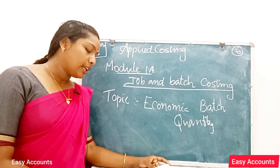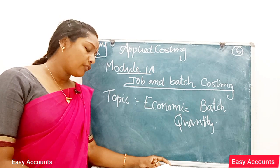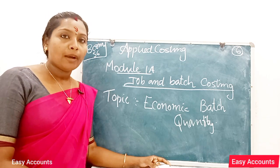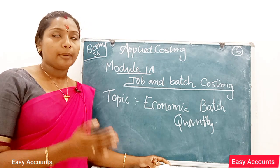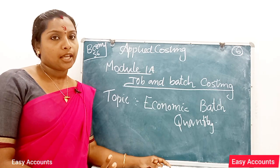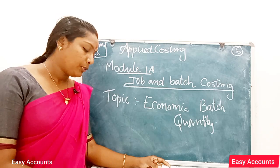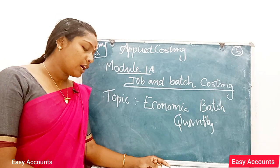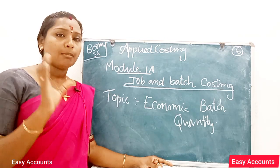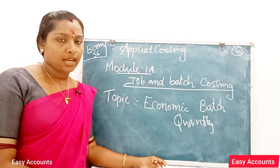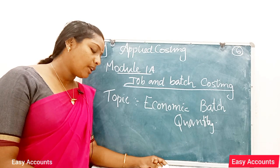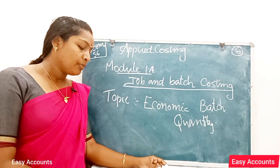Since production is done in batches, the number of units to be manufactured in one batch is very important, as it influences the batch cost. The optimum number of units in one batch will minimize the cost. A number of related factors are to be considered for determining the ideal or economic batch.